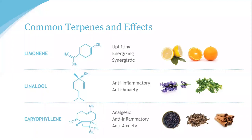Caryophyllene is another very common cannabis terpene regarded to have anti-inflammatory, anti-anxiety, and analgesic properties. It may also be helpful in reducing alcohol cravings, which is being studied. It's found in black pepper, cloves, and cinnamon, and consequently has a spicy, peppery profile. Caryophyllene binds to CB2 receptors and often appears in anti-inflammatory topicals. Both hosts note they have spoken with patients who have battled alcoholism and found cannabis to be a good way to transition away from it.